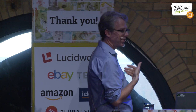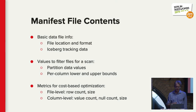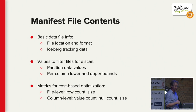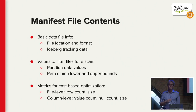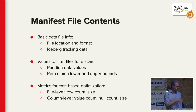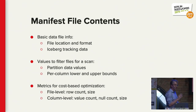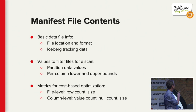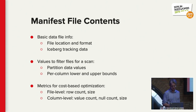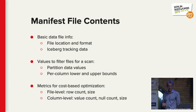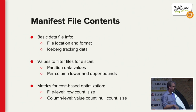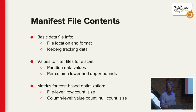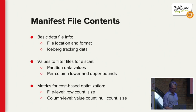What goes into the manifests? The list of all files and Iceberg tracking data. It also lets you track the partition values and the per-column upper and lower bounds so that you can do partition pruning and even bucket pruning based just on the contents of the manifest. It also gives you row counts, sizes, null counts — a lot of extra detail that optimizers want in order to operate efficiently on the data, so you can get much better query optimization without actually looking at the files.